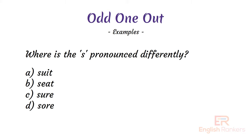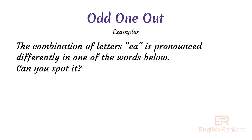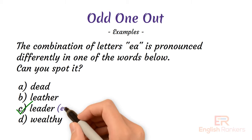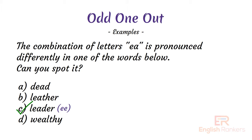The answer is C) sure. Here, S sounds like 'sh' in 'sure', whereas in the rest of the options it sounds like 'S' — suit, so. Next example: the combination of letters E-A is pronounced differently in one of the words below. The answer is option C) leader. In 'leader' a double-E sound is coming, while in the other options it is a short E sound — dead, leather, wealthy.